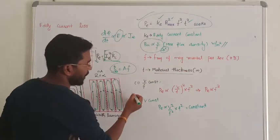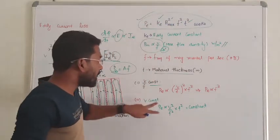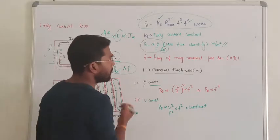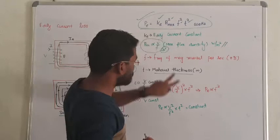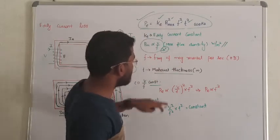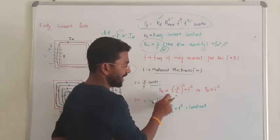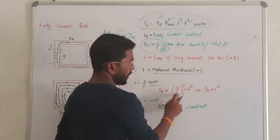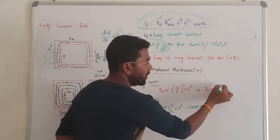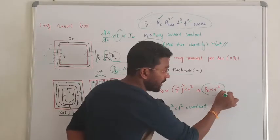So let me take the eddy current loss. Suppose if in the eddy current loss V by F constant is here. When V by F become constant, take these two terms outside, replace B max by V by F. Then what happens, eddy current loss is directly proportional to V by F square into F square. Since V by F is constant, eddy current loss is directly proportional to square terms of frequency. Don't forget, very important.